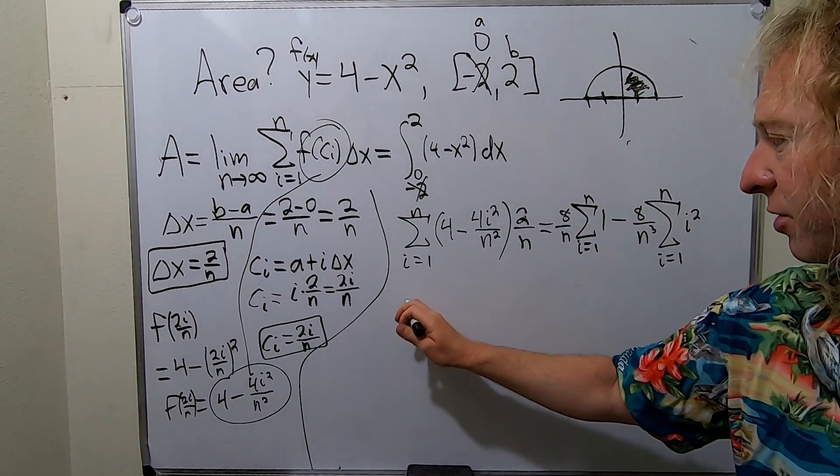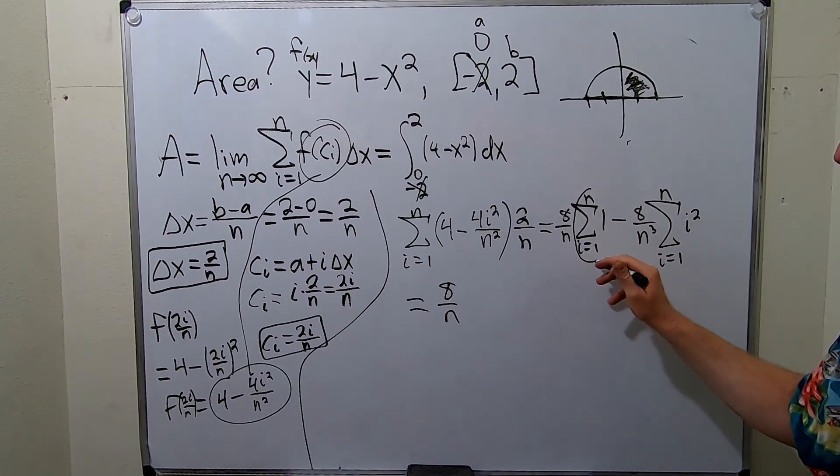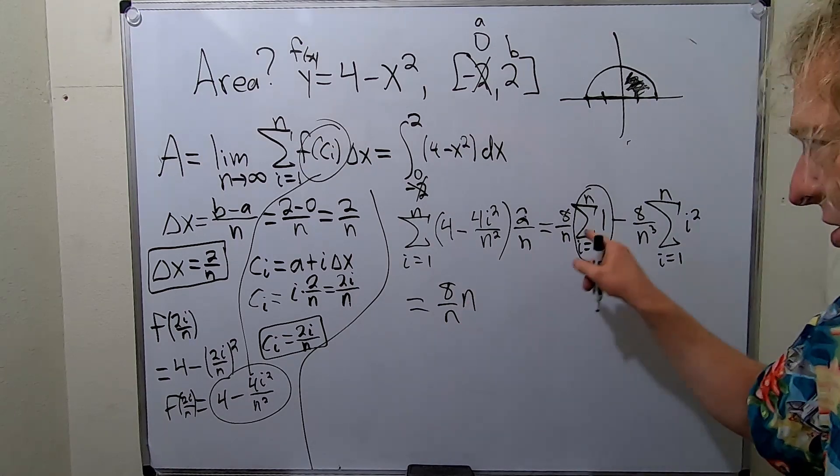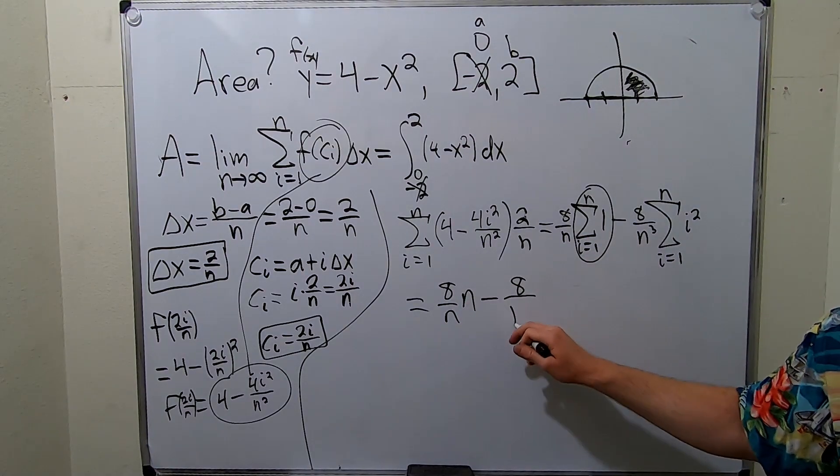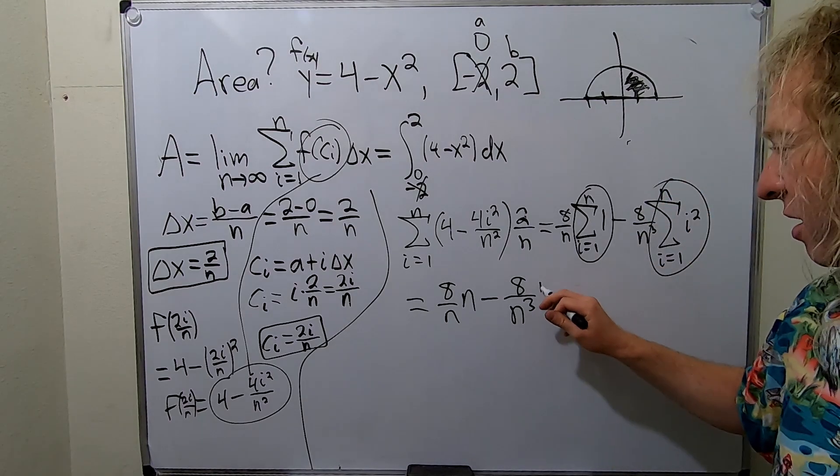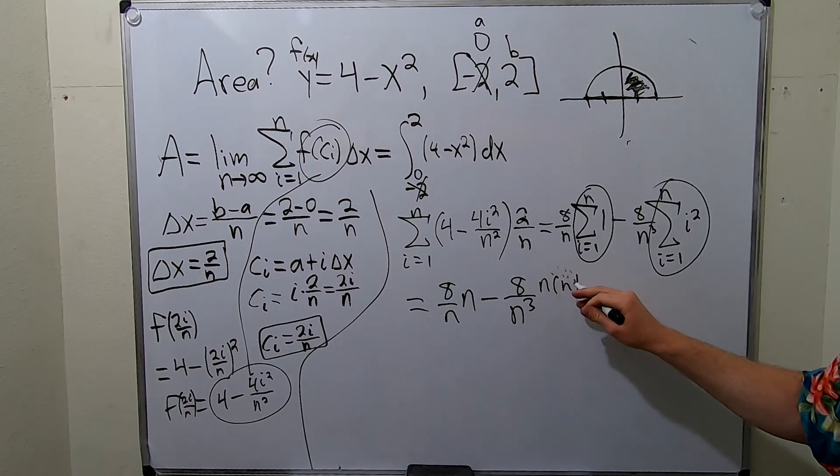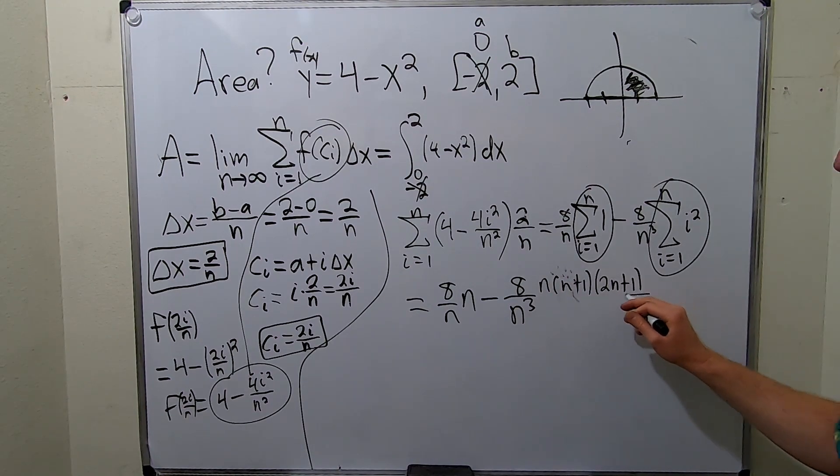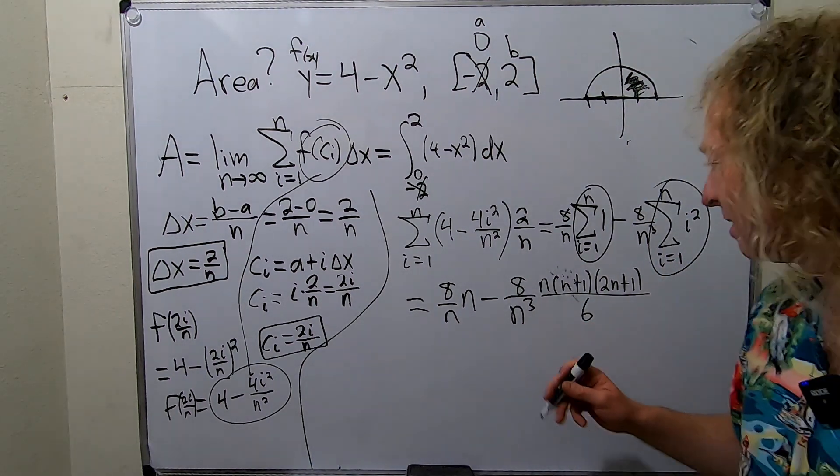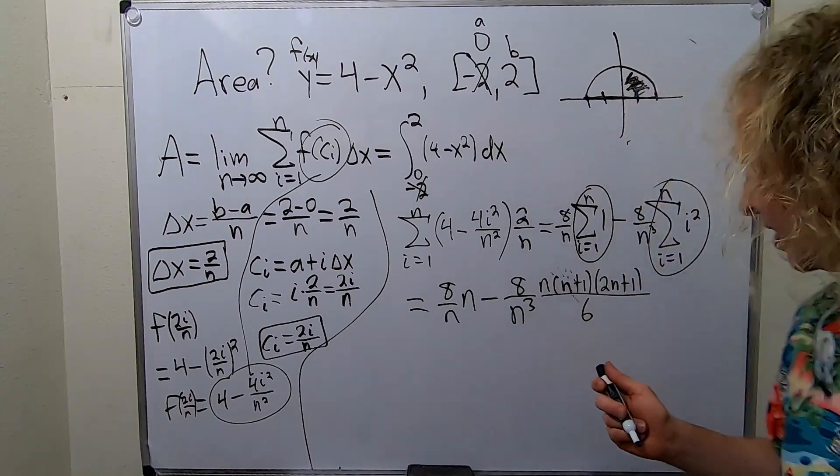This is n. Whenever you have 1 and you're adding it to itself over and over again, you just get n. So this is just n, always. Minus 8 over n cubed. This is a formula. It's n, n plus 1, 2n plus 1 over 6. So it's a really annoying formula to memorize. So it's n, n plus 1, 2n plus 1, and it's all over 6. That's what this is.